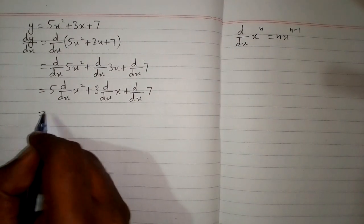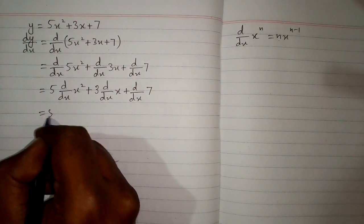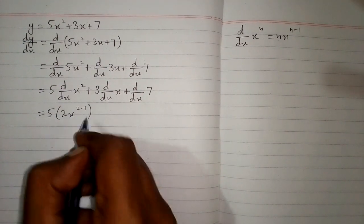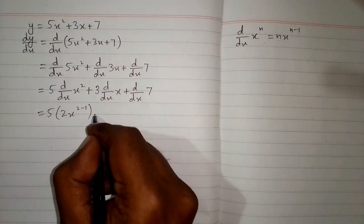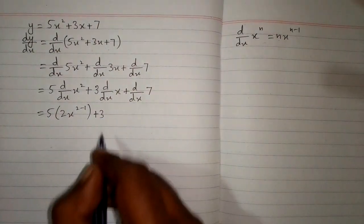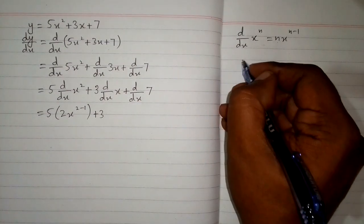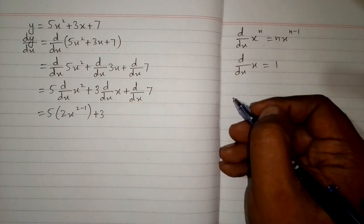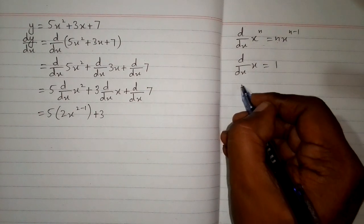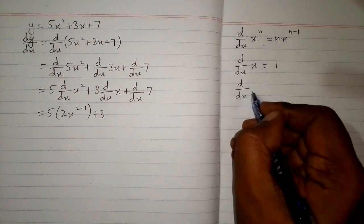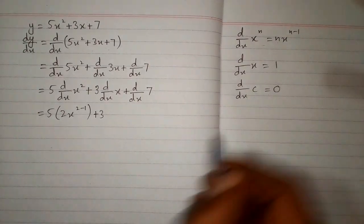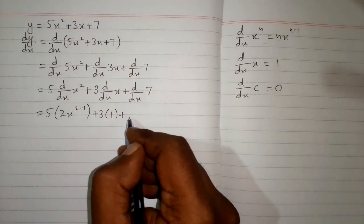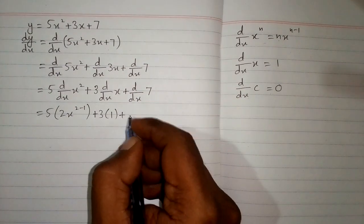So we write 5 times the derivative of x squared, which is 2 times x to the power 2 minus 1 by this formula, then 3 times the derivative of x. The derivative of x is 1, which we can find using the same formula, and the derivative of the constant 7 is 0.